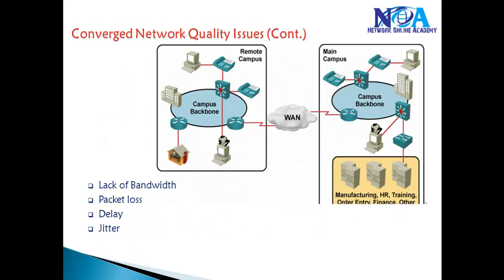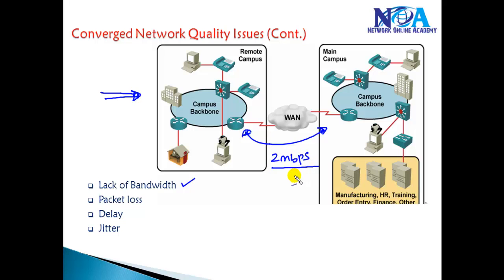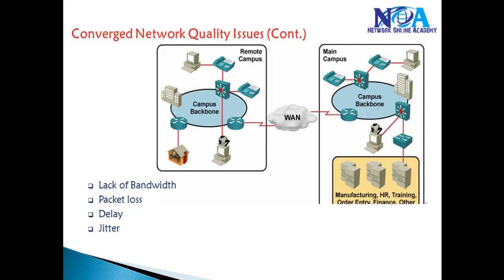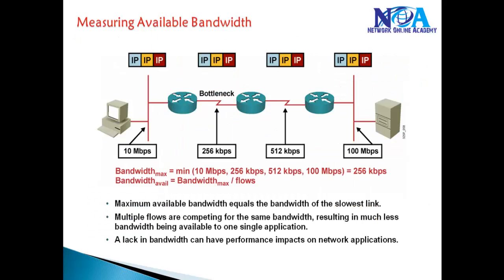The first common problem is lack of bandwidth. You might be trying to send information over the network, but the WAN link connecting the routers is just 2 Mbps. If there is not enough bandwidth, packets get dropped and the network gets congested. For example, a sender connects to the LAN at 10 Mbps.